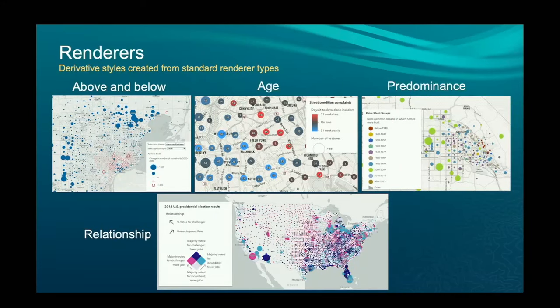Some additional styles — these are not proper renderer classes per se, but I think of them as derivative styles from existing ones that we can generate through helper functions we call our smart mapping APIs. You can do above and below visualizations. If you have columns for Republican, Democrat, and other parties, this style looks at all those fields and maps a color to the winning field. Then there's the relationship style — if you're familiar with bivariate choropleth in cartography, we call it relationship in our SDK — and you can do all kinds of things with not only two variables, but three variables, also varying size.